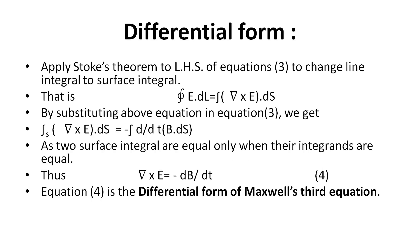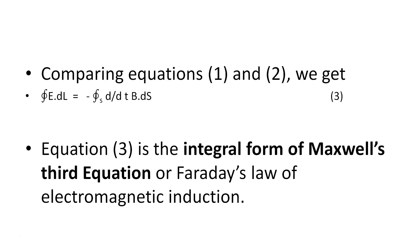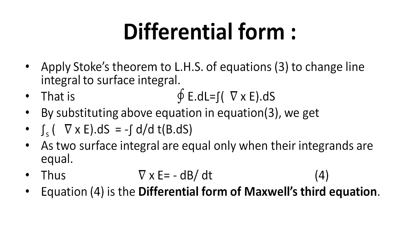To obtain the differential form, we apply Stokes' theorem to the left-hand side of equation 3 to convert the line integral to a surface integral. Stokes' theorem converts a line integral into a surface integral. Applying it to the left-hand side ∮E·dL, it becomes ∫∫(∇×E)·dS. Substituting back into equation 3 gives: ∫∫(∇×E)·dS = -d/dt ∫∫B·dS. Both surface integrals are equal only when their integrands are equal.